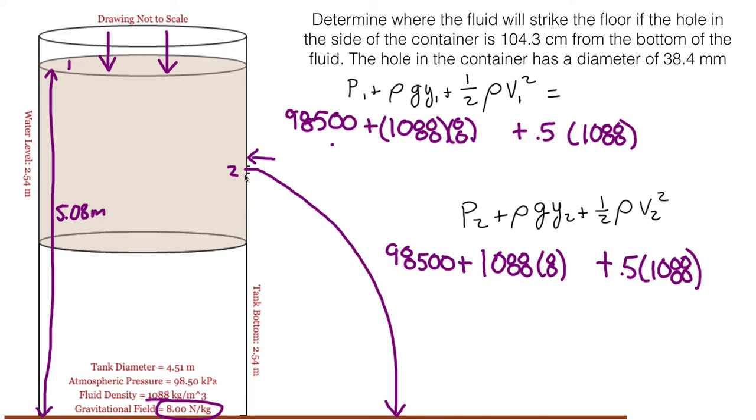To this other location, location 2, we have to do 2.54 plus an additional 1.04 because that's how far the hole is from the bottom of the tank. So we use that as our total distance. And that will go in Y2. That will be 3.58. So height 1 is 5.08 and then height 2 would be 3.58.